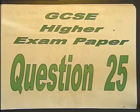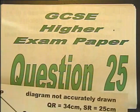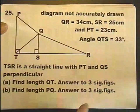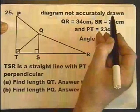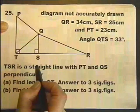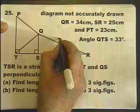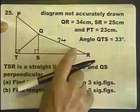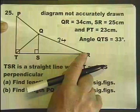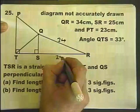GCSE Higher Exam from 2011 Paper 4, Question 25. Diagram not accurately drawn. So, we are told that QR is 34 cm, SR is 25 cm,